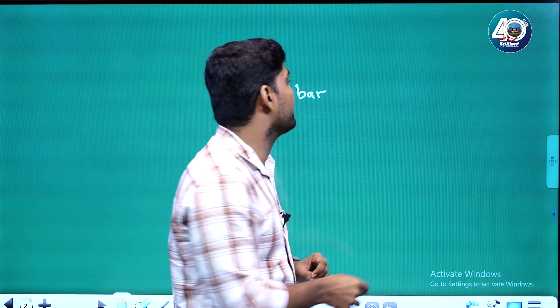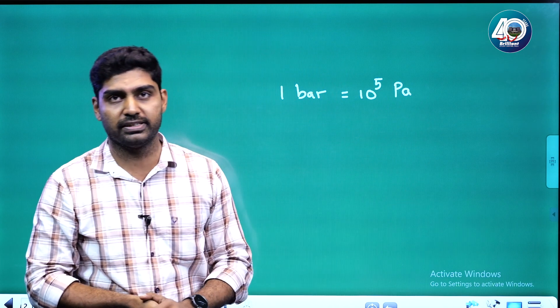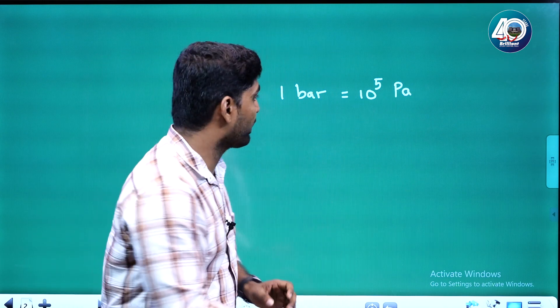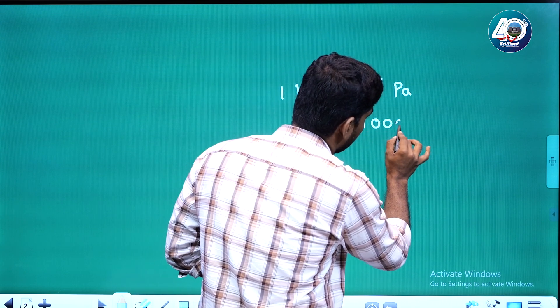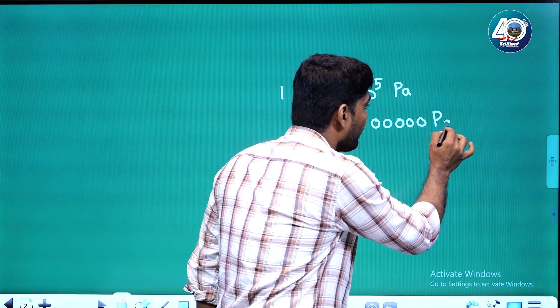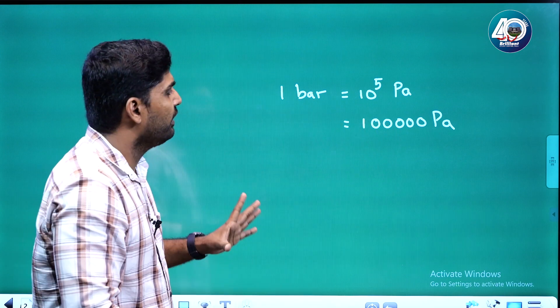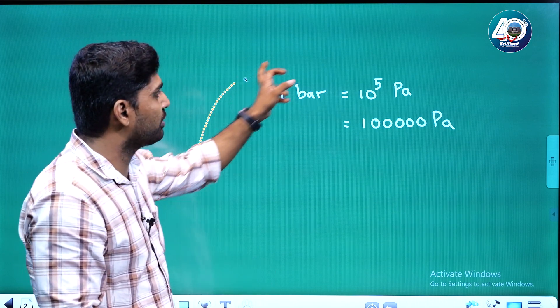One bar of pressure on our body at sea level is approximately 1.013 × 10^5 Pascal. That is 10^5 Newton per meter squared. We go through measuring pressure at sea level.